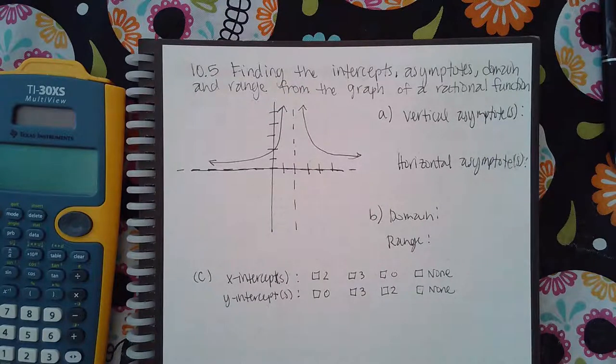Okay, here we have problem 10.5: finding the intercepts, asymptotes, domain, and range from the graph of a rational function.